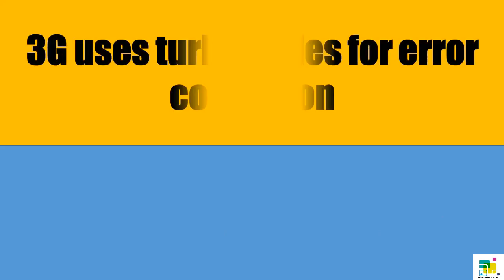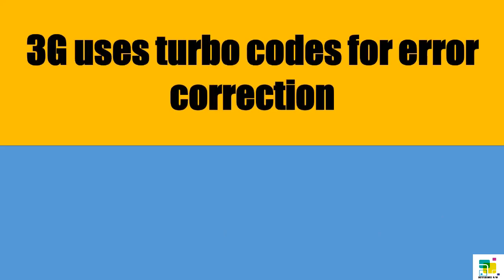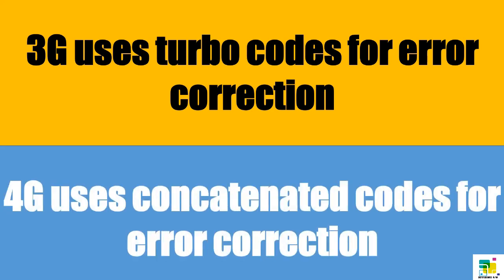3G technology uses turbo codes for error correction. And 4G technology uses concatenated codes for error correction.